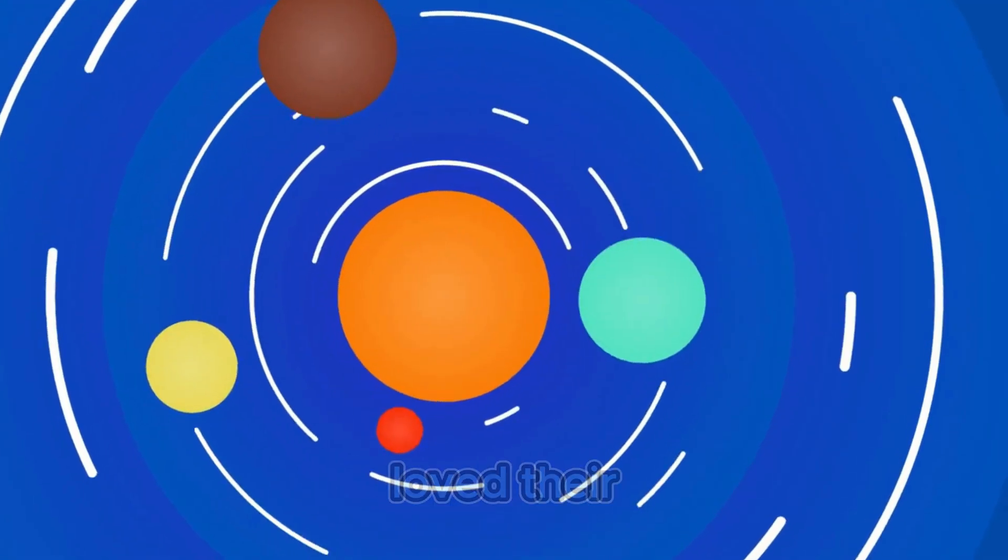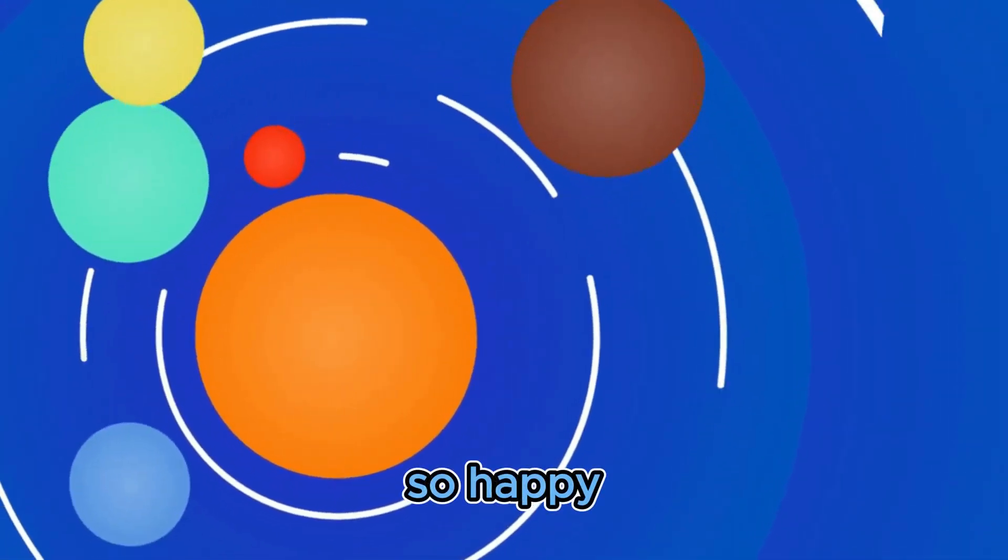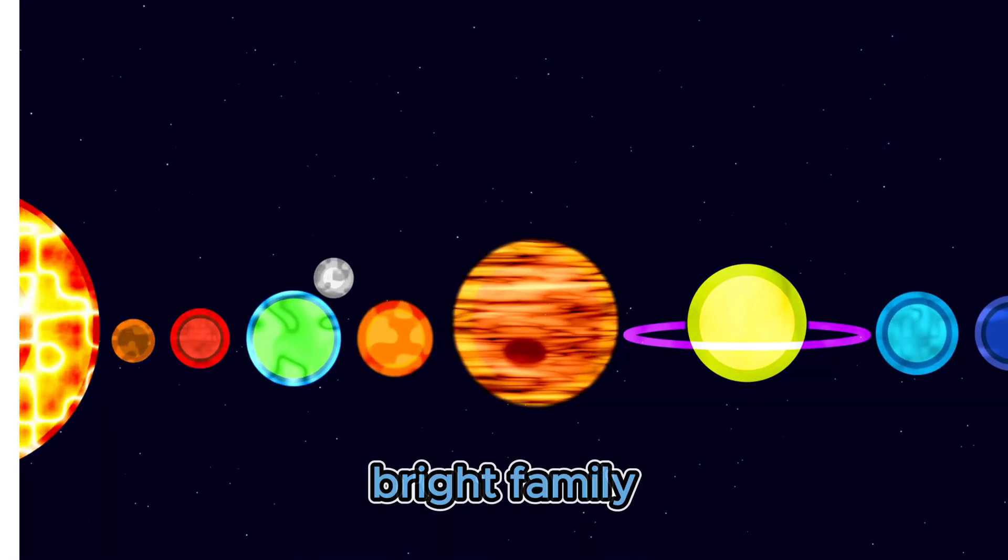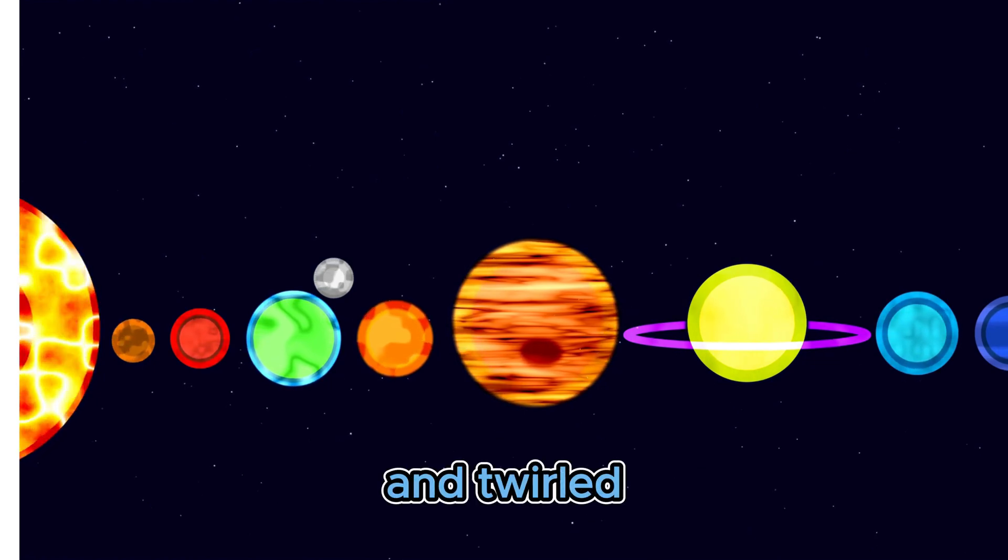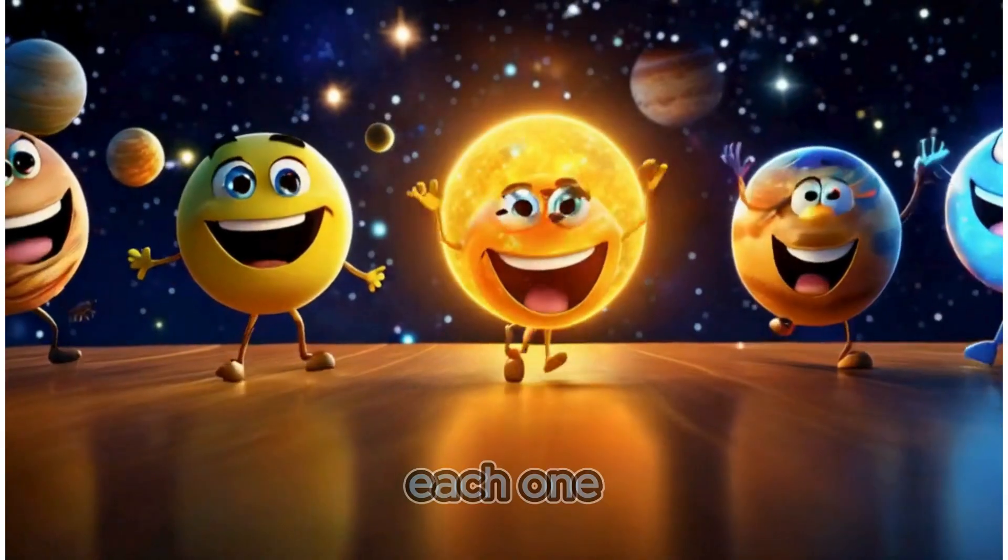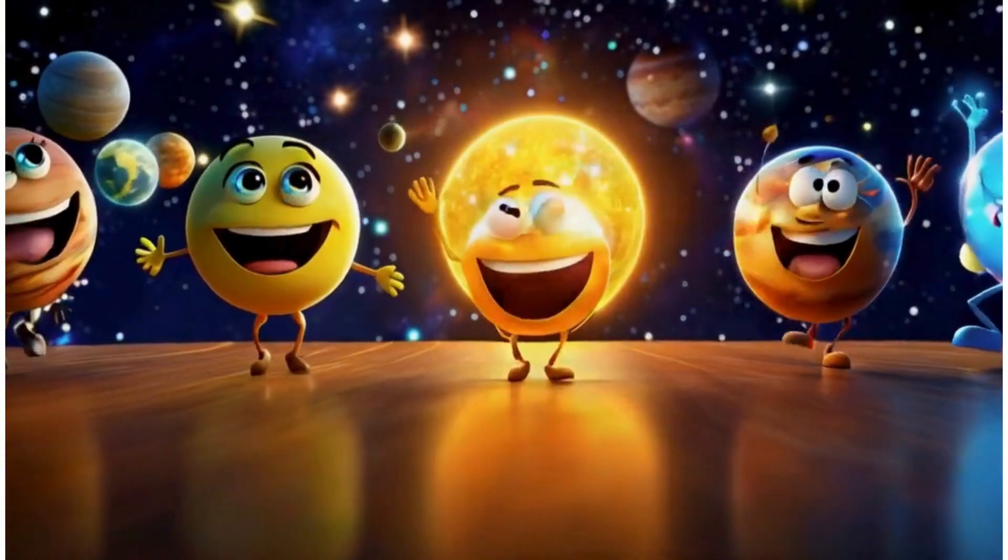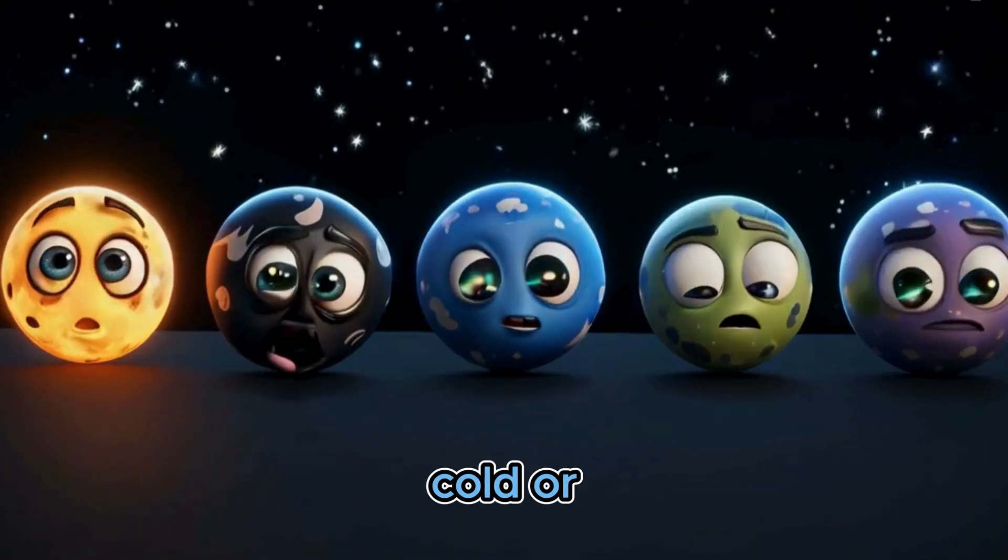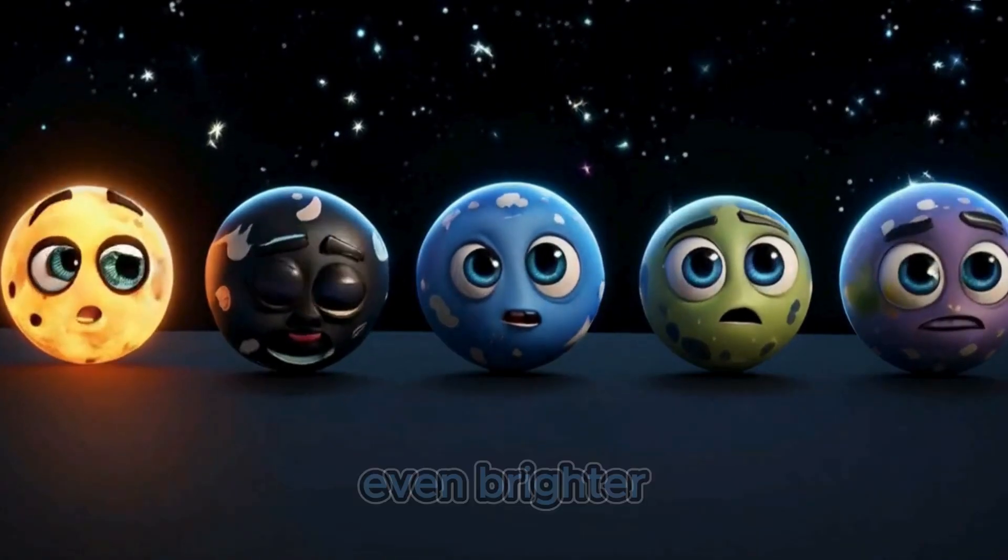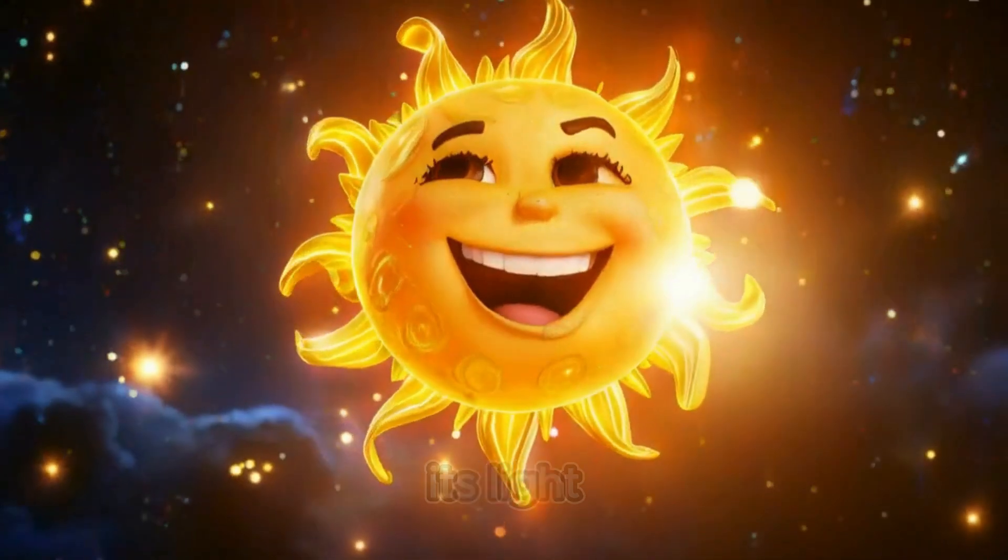The planets loved their warm, glowing sun, and were so happy to be part of its big, bright family. They spun and twirled around the sun every day, each one doing its special dance. And whenever they felt cold or lonely, the sun would shine even brighter, wrapping them all in its light and love.